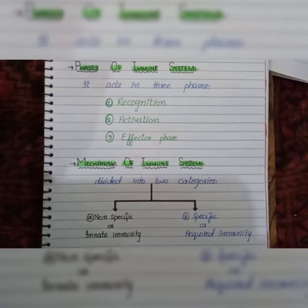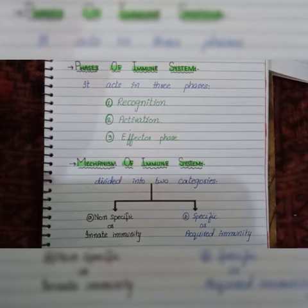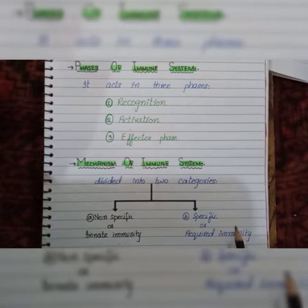As we study the immune system, these components and phases help maintain the mechanisms of our immune system. We divide these mechanisms into two categories: first, non-specific or innate immunity, and second, acquired immunity. Now we will focus on each one in a bit more detail.